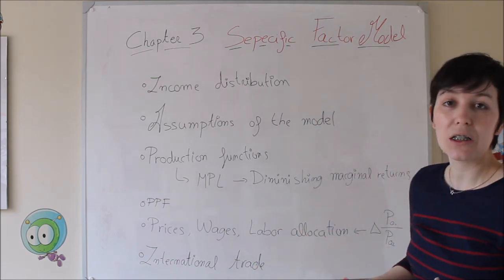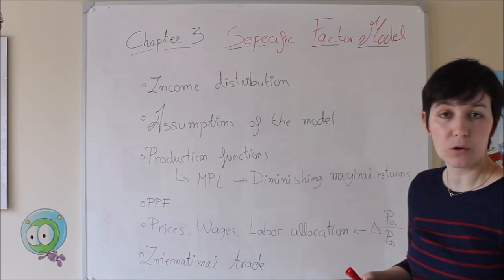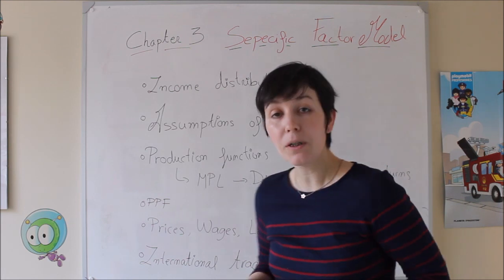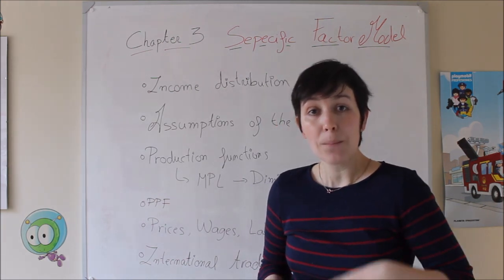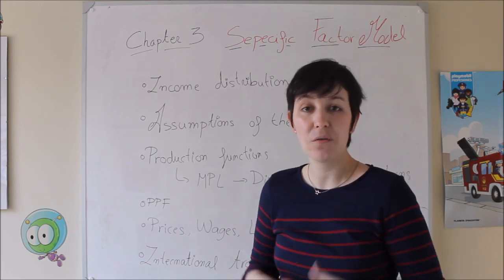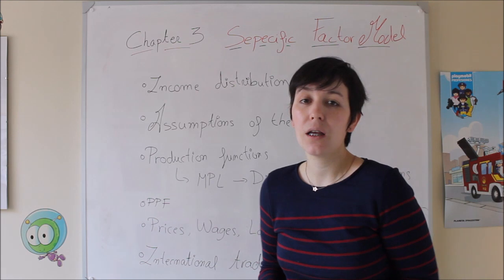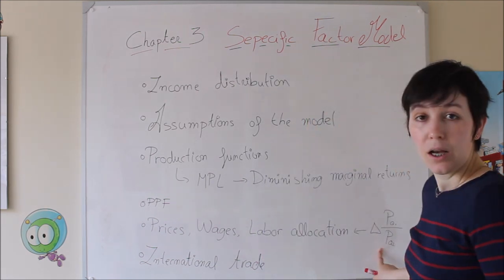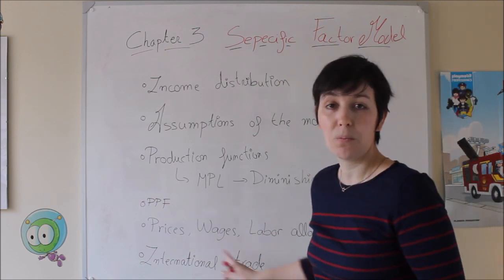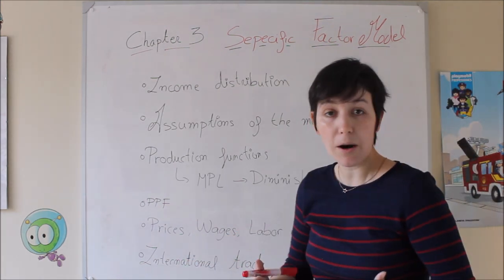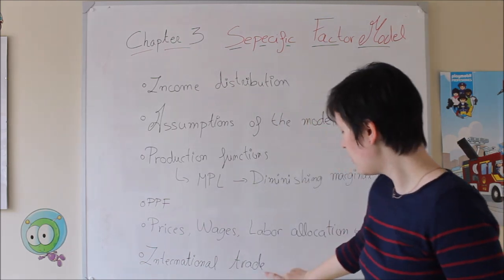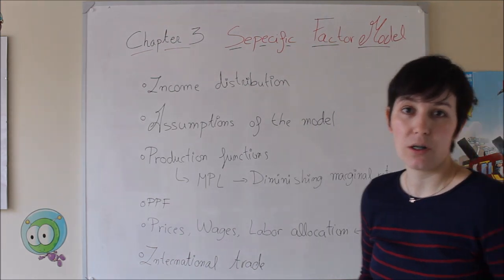We are going to see the implication of changes in prices and what variable is going to determine the allocation of labor. When we set that framework, we are going to make some changes in the prices of goods in one specific economy, and then open that economy to international trade. The main changes generated by the new international trade framework will be implications in prices, so we will be able to elaborate the new implications of international trade.